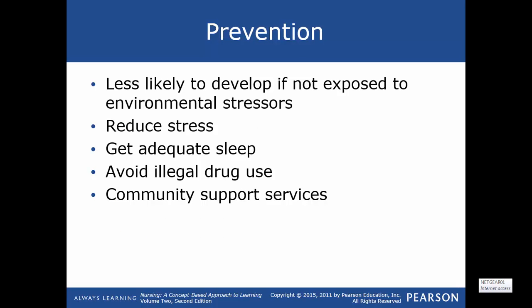For prevention, individuals are likely to develop schizophrenia if exposed to environmental stressors. Protective measures include reducing stress and keeping them out of high-stress environments, ensuring adequate sleep, and avoiding illegal drug use — all of which can lower the likelihood of developing schizophrenia. Community-based programs and social support services are also available to help alleviate these stressors.